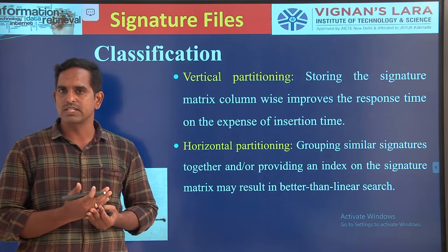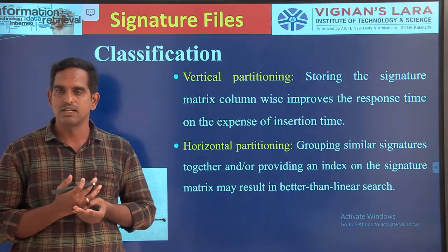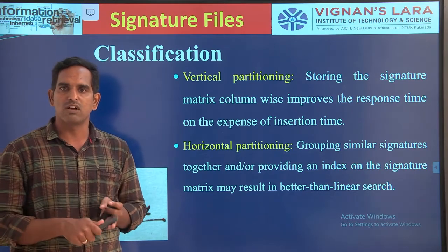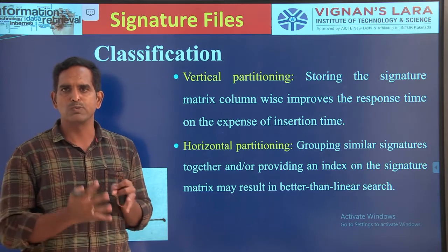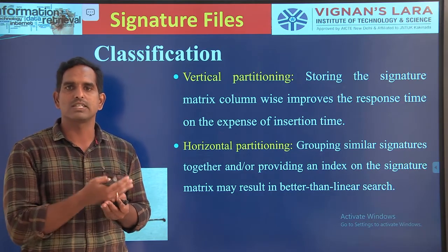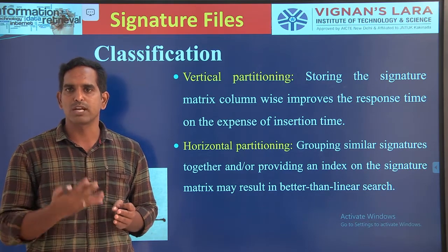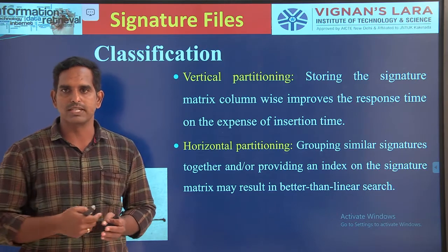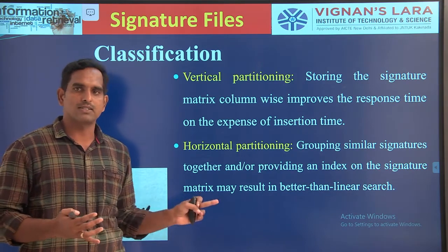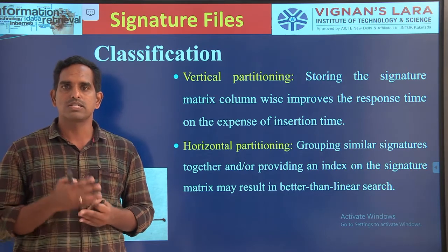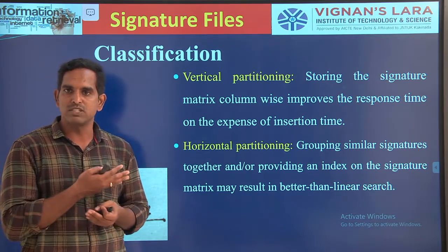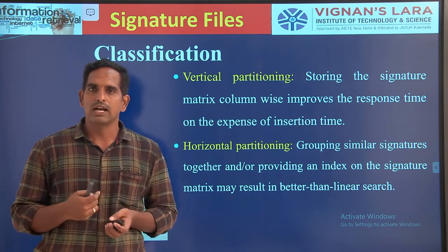Whatever future signature files you are going to develop will involve any of these three things: vertical partitioning, where you store your file in column-major order; horizontal partitioning, where you group similar signatures into one and provide an index to that; or compression, where if your signature file is in a sparse matrix form, you can perform compression. Or we can combine these — implementing vertical partitioning and compression in the same method, or horizontal partitioning and compression in the same signature file. Based upon which method you are using, we will have our classification of signature files.